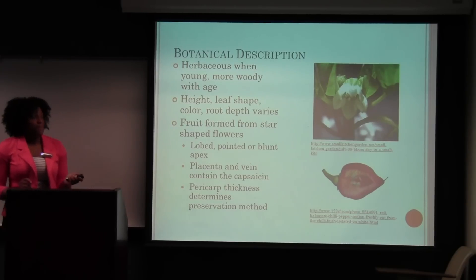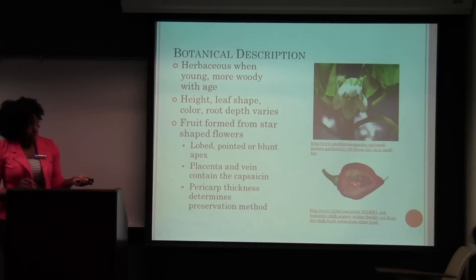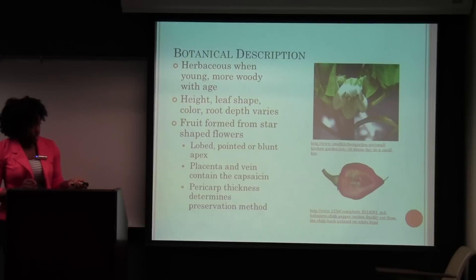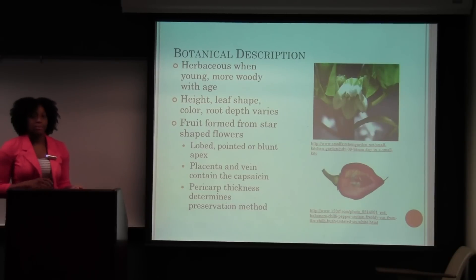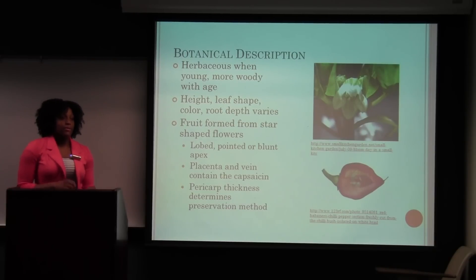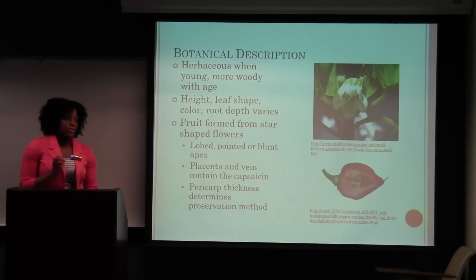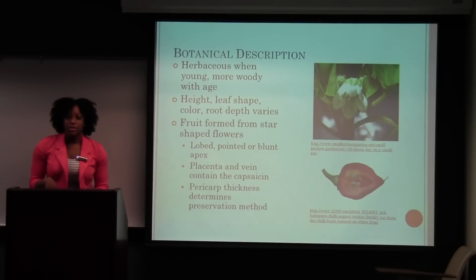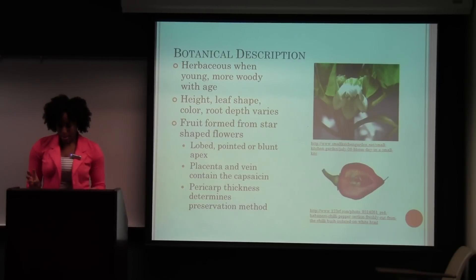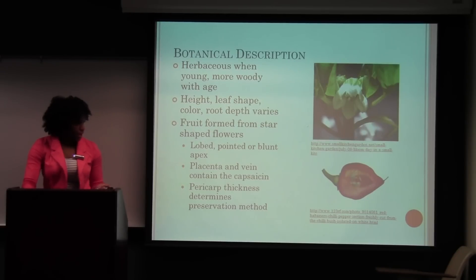The pepperoncini pepper I passed around has a blunt apex. The placenta and the vein contain the capsaicin — the placenta is the part in the middle, and it contains the seeds too, but most of the capsaicin is found closer to the middle in the placenta. The pericarp thickness determines the preservation method. If you have a very thin pepper, like the Piri Piri from South Africa, you can easily dry it; but if you have a thick pepper like a bell pepper, those are usually pickled, smoked, or canned.